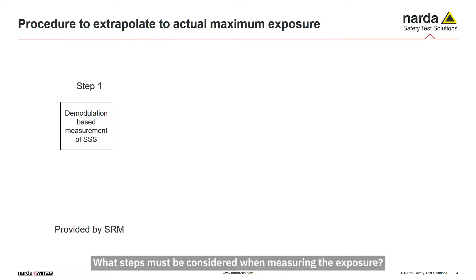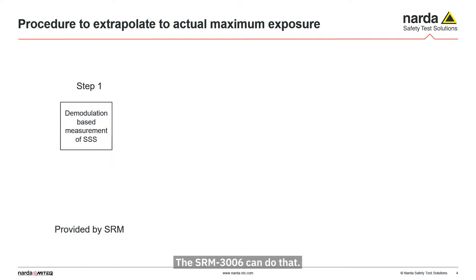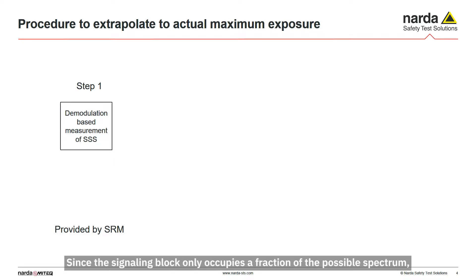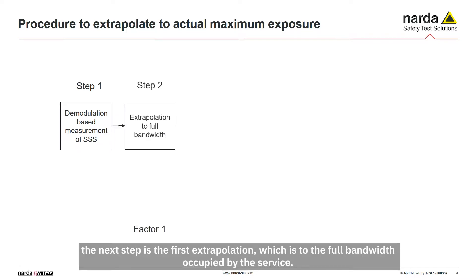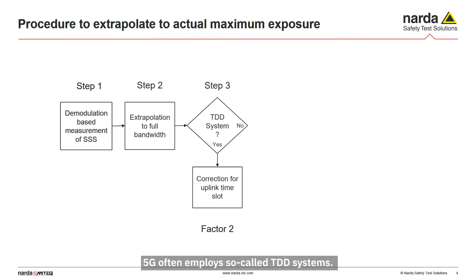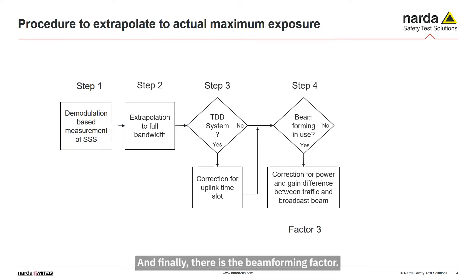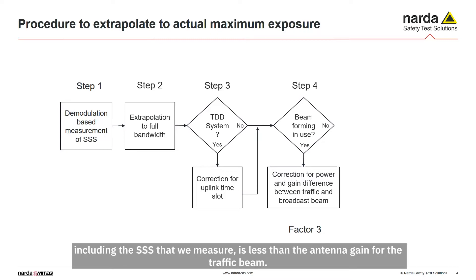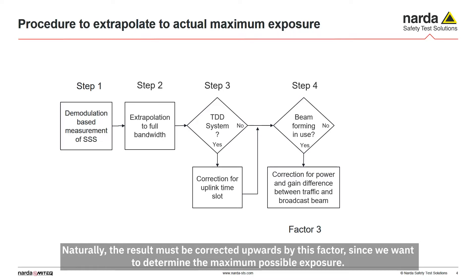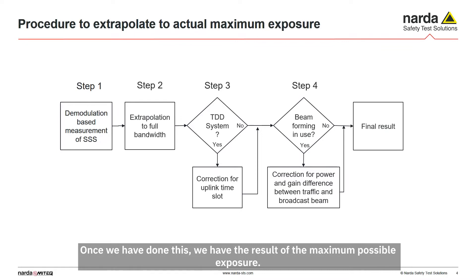What steps must be considered when measuring the exposure? The first step is to measure the SSS reference signal — the SRM-3006 can do that. Since the signaling block only occupies a fraction of the possible spectrum, the next step is extrapolation to the full bandwidth occupied by the service. If 5G employs TDD, the result must be corrected by the TDD factor. And finally, there is a beamforming factor: if beamforming is used, the antenna gain for the signaling including the SSS is less than for the traffic beam, so the result must be corrected upwards. Once this is done, we have the maximum possible exposure.